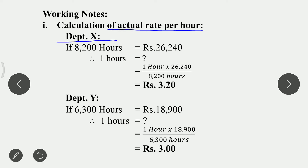For Department X: if 8,200 hours worth total wages is Rs. 26,240, then for 1 hour it will be: 1 hour × Rs. 26,240 ÷ 8,200 hours. For Department X, actual rate per hour is Rs. 3.20.